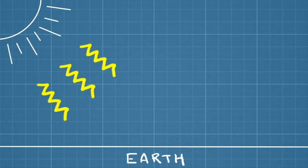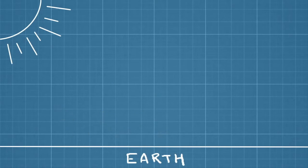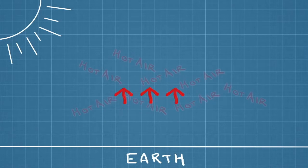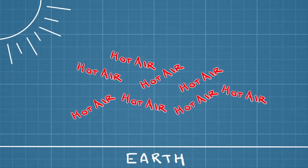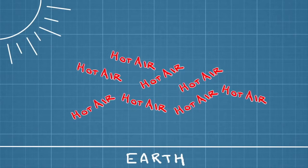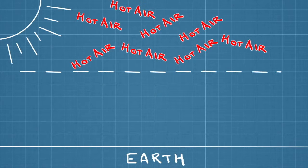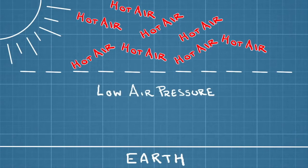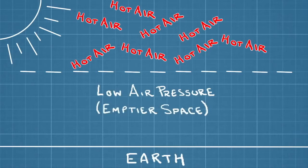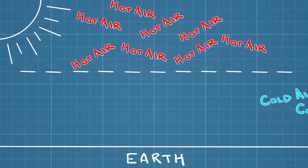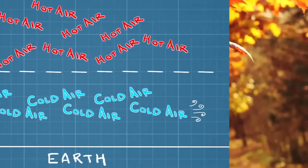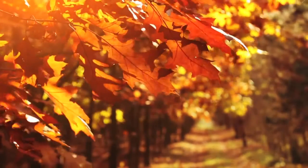Furthermore, the heat the Earth absorbs doesn't stay in one place for long. It's transmitted from Earth's surface to the surrounding air. As the air warms relative to its surroundings, it becomes less dense and begins to rise, creating an area of low air pressure — sort of an empty space, or at least an emptier space in the atmosphere. In response, colder, denser, high-pressure air rushes in to fill the low-pressure void, creating the movement of air we know as wind.